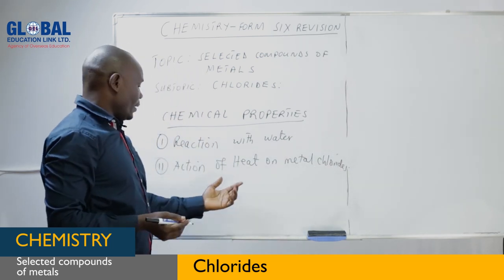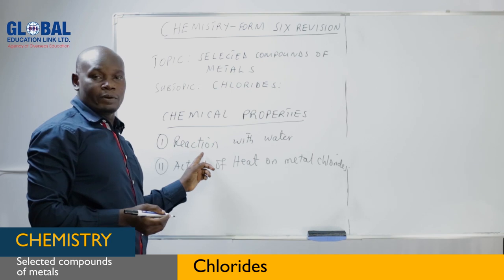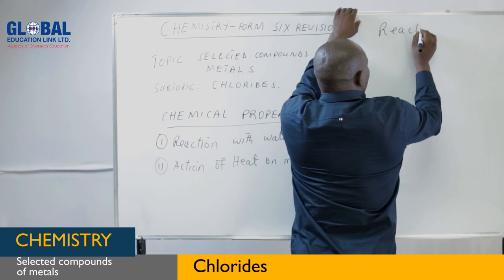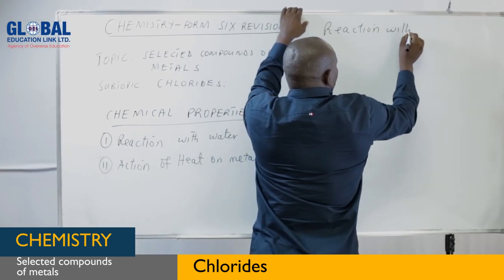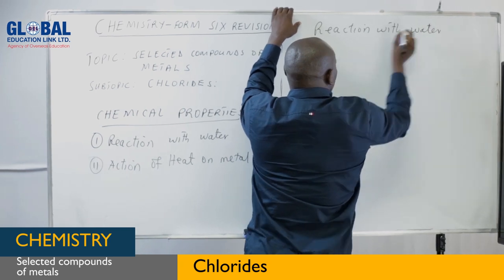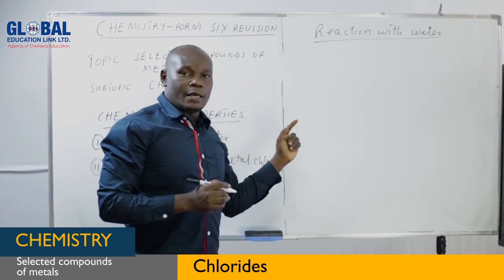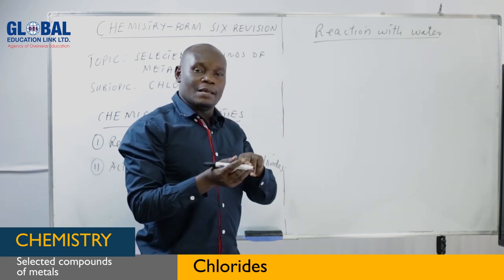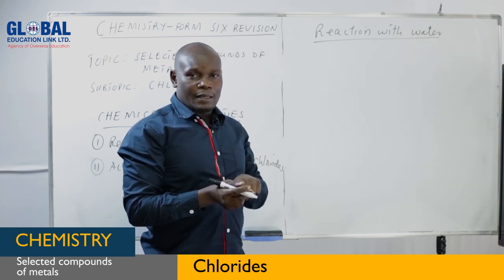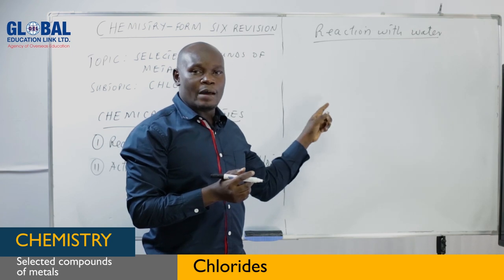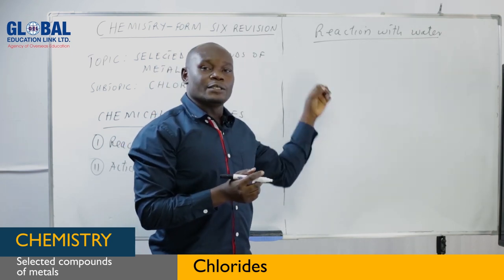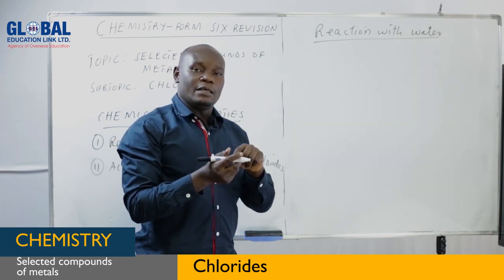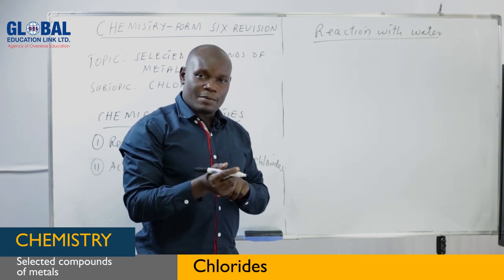Let us consider the reaction of metal chloride with water. Normally, the reaction of the metal chlorides of sodium and magnesium with water does not take place. What happens is that the metal chloride dissociates into their respective ions. So there is no reaction between water and the metal chloride of sodium and magnesium.